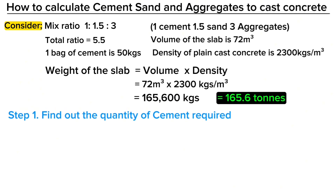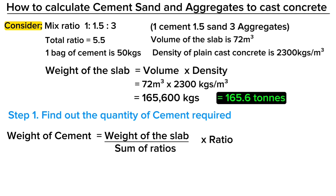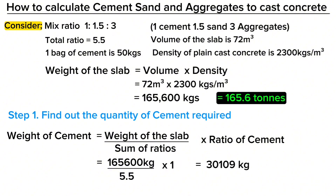Step 1 is to find out the quantity of cement required. The weight of cement in the mixture is equal to total weight of the slab, divided by the sum of ratios, multiplied by the ratio of cement. When you feed in the required figures, you get the total weight of cement in the mixture as 30,109 kilograms.